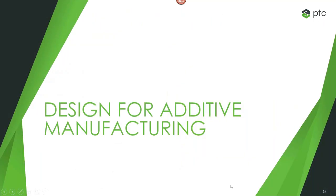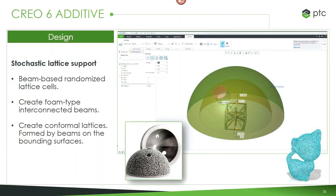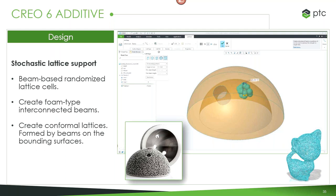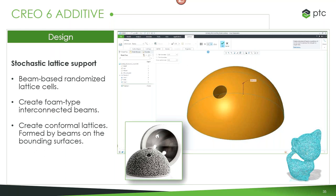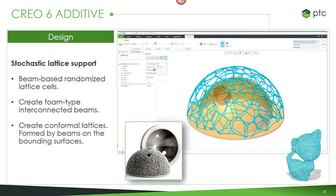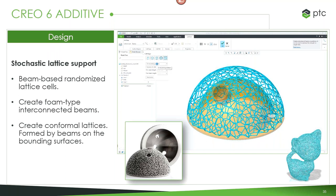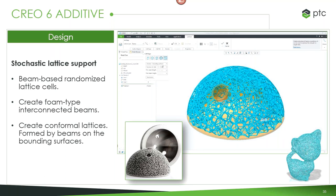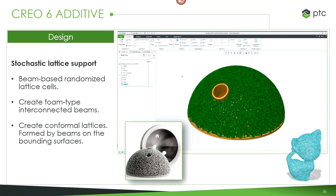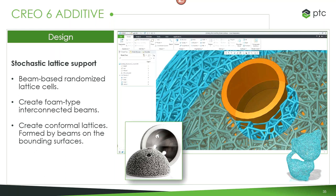For design for additive manufacturing, we have exciting changes. Additive manufacturing came out in Creo 4, and we've expanded it in Creo 5 and now 6 to introduce different new lattice types. One new type is the stochastic lattice — think of it like a foam, a lot of interconnected beams connected randomly. This lets you decide how it fills out, get a visualization, and then automatically fill in the part. You can easily modify density, number of cells, or how it's bounded, going from 1,000 to 5,000 cells and having it instantly update.